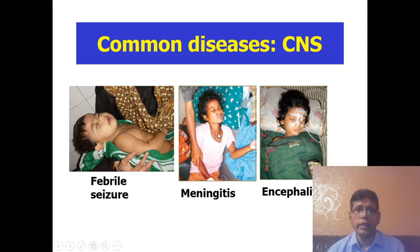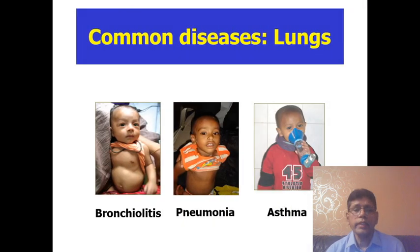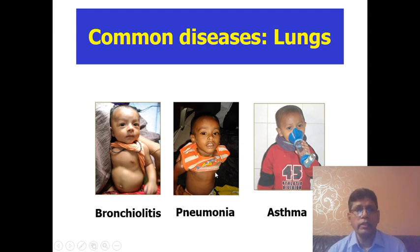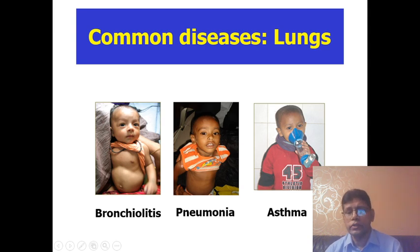A child coming with signs of meningeal irritation — fever, convulsion, impairment of consciousness — this is encephalitis. For respiratory: a child coming with cough and respiratory distress. Most important is bronchiolitis — if the child is below two years, coming with wheeze. In pneumonia there will be fever, respiratory distress, and crepitations or bronchial breath sounds, and you will find consolidation on imaging. In asthma there will be recurrent respiratory distress, response to bronchodilators, and atopic conditions like allergic rhinitis, conjunctivitis, and eczema.